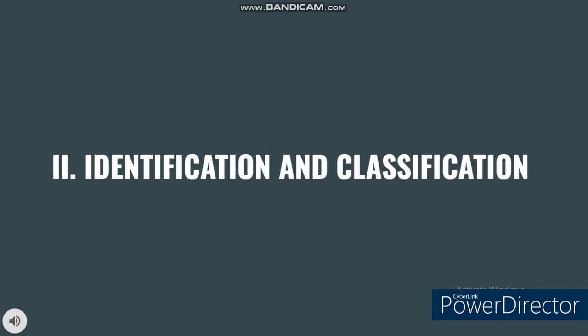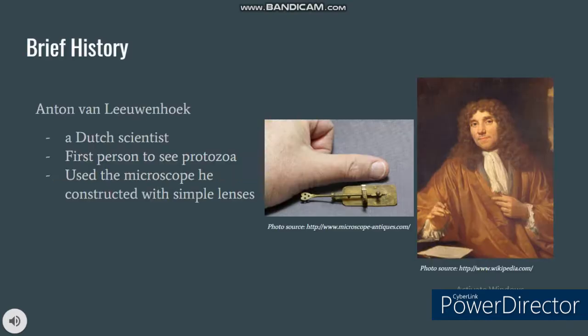In this part of the discussion, we would be learning how protozoans were identified and classified. Learning a bit of its history will best help us understand the way it is right now. Protozoa's history involves the father of microscopy, Anton van Leeuwenhoek. He is a Dutch scientist who was the first person to observe protozoa using the single lens microscope that he constructed. In addition to free-living protozoa, he described several parasitic species from animals and Giardia lamblia, a flagellated parasitic microorganism from his own stools.